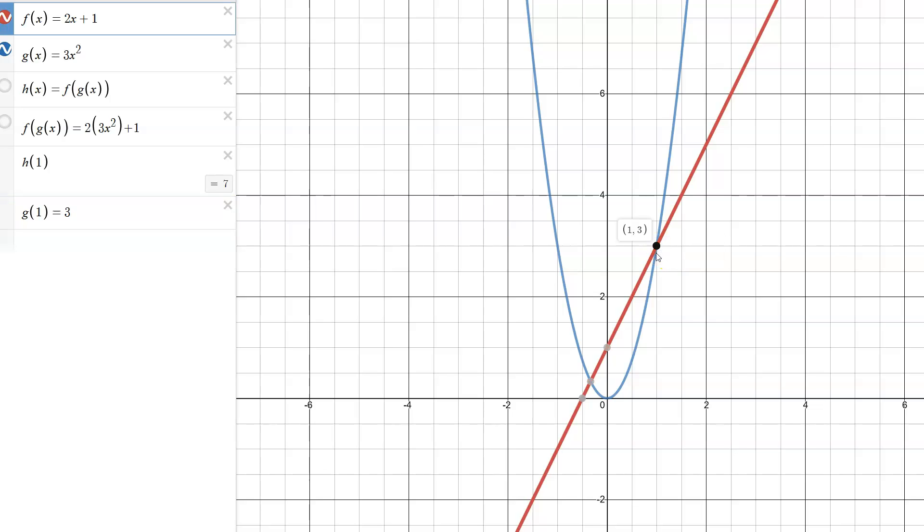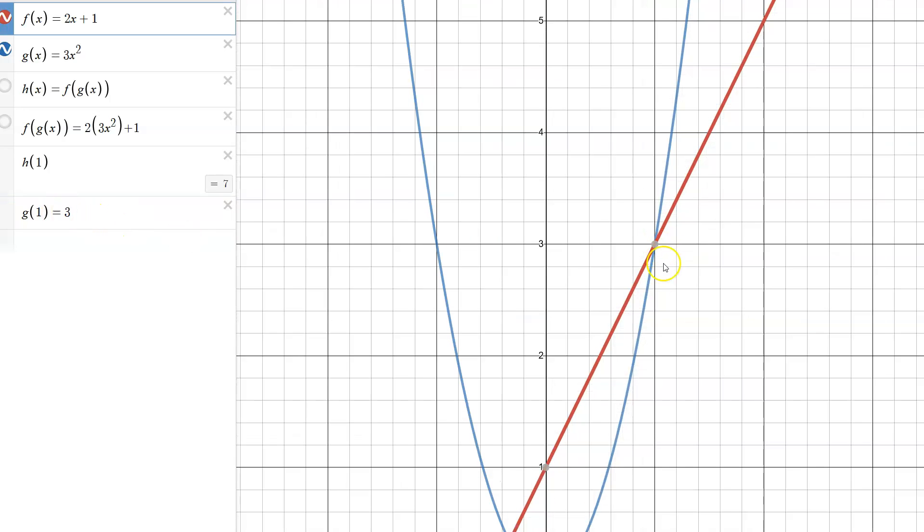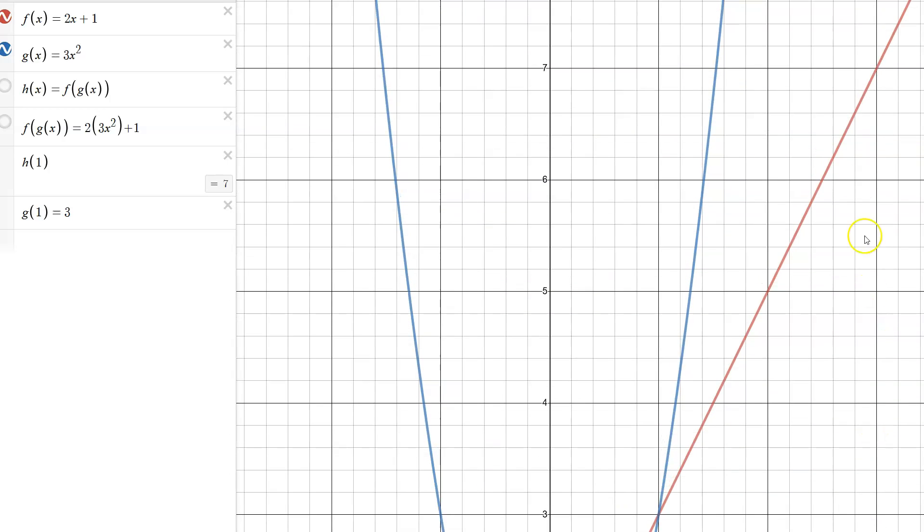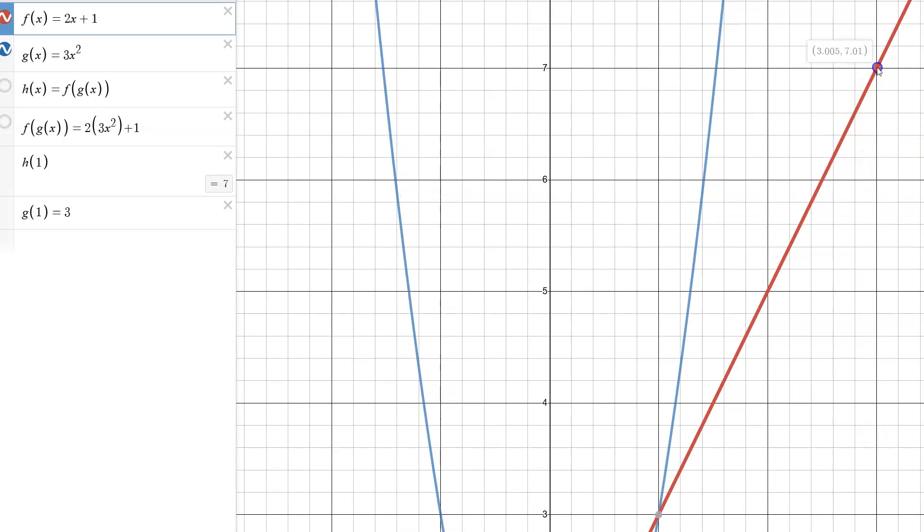You might have this as a table or you might have it as a graph, so you can zoom in and see at x equals one it crosses at about a height of three. The output of g is three and that is feeding f, so now we're looking for f of three. We come over to x equals three and come up to where f is, lo and behold we get seven. Since g of one is three and we feed that to f we get seven, and that matches up with what h of one is.